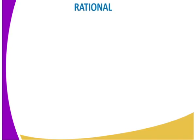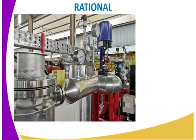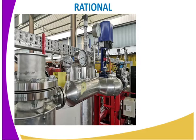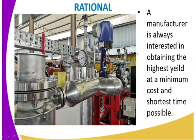Why is it important for us to understand Le Chatelier's Principle? Most manufacturing industries involve chemical reactions, and to come up with the best yield in an economical way, it is important to vary conditions appropriately because these reactions occur at given chemical equilibriums. As you can see from the diagram, we have a pressure gauge and cylindrical metallic containers where temperature and concentration can be varied. A manufacturer is always interested in obtaining the highest yield at minimum cost within the shortest time possible, hence making the process economical.